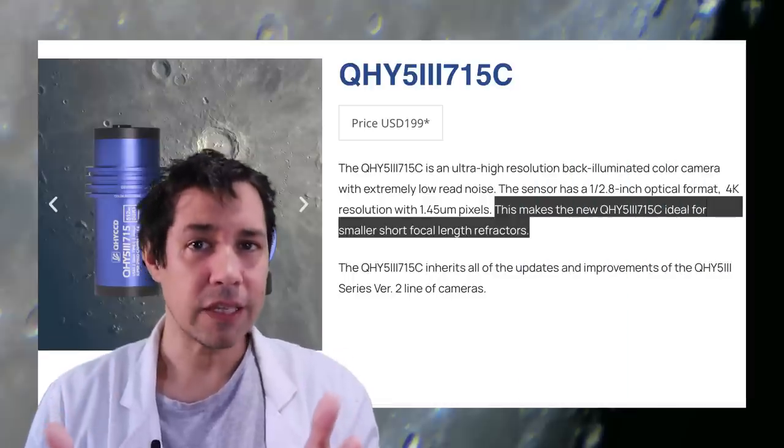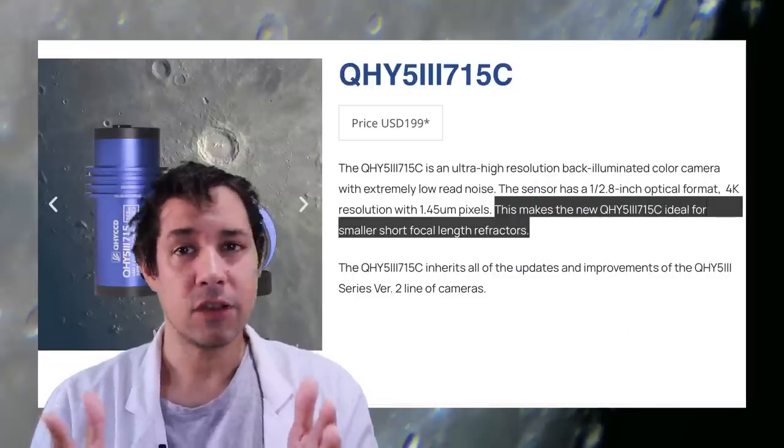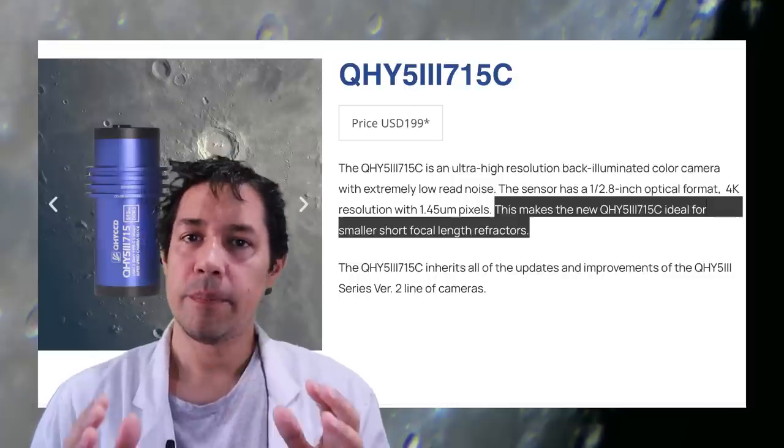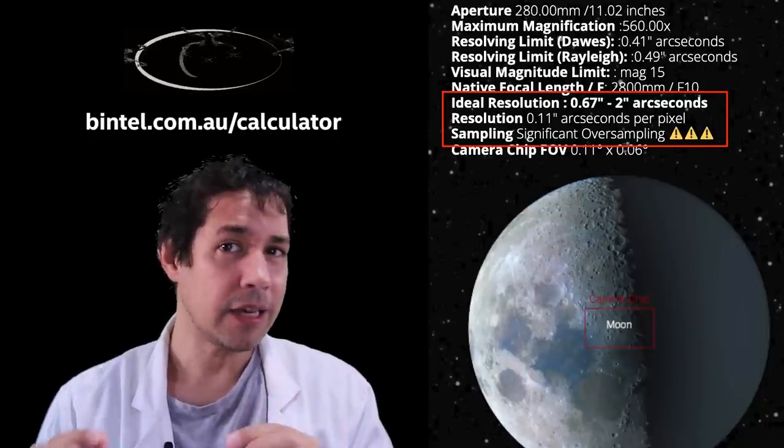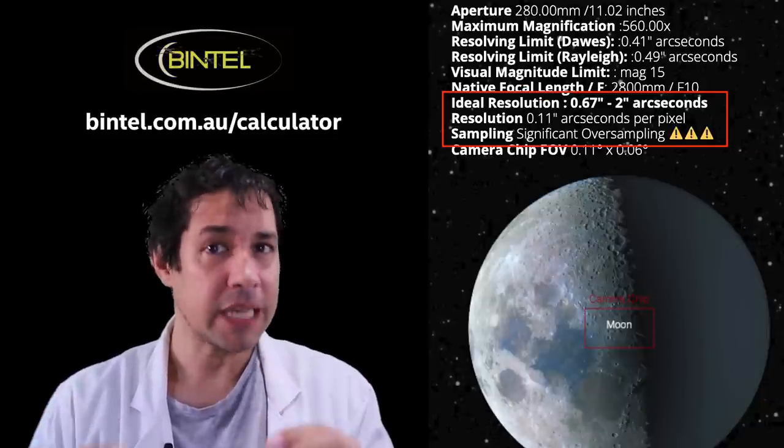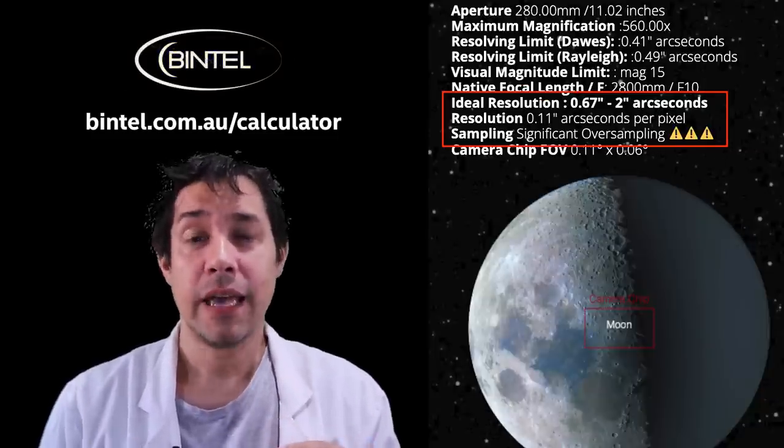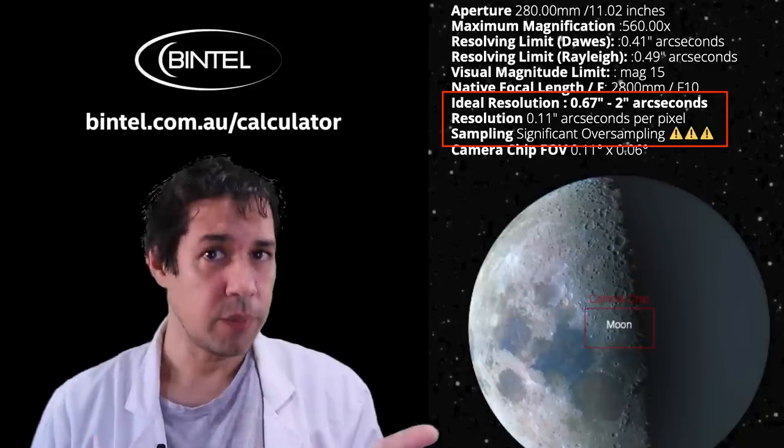But one of the other really important factors here is that this camera isn't designed for these massive focal lengths. What's happening is that it's oversampled quite dramatically. But essentially, it means that the camera's tiny little pixels are capable of picking up more detail than the telescope's maximum resolution will allow. And we can check that by running this through the Bintel calculator.